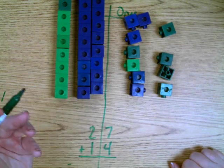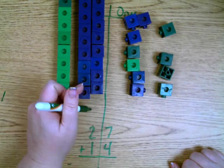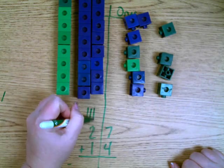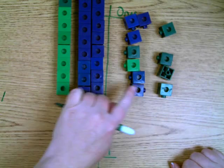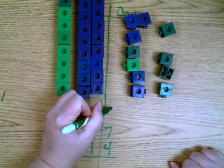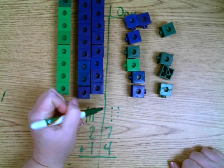Well, I have three tens: one, two, three. And I have seven ones here: one, two, three, four, five, six, seven.